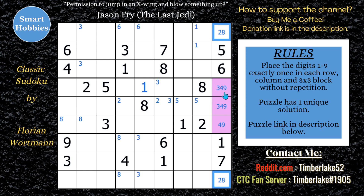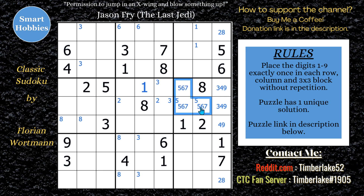Since we have the 3, 4, 9 naked triple now, what's remaining in those cells is 5, 6, and 7. I'll mark those. And this can't be a 5 because there's a 5 right there. This is helpful for us.